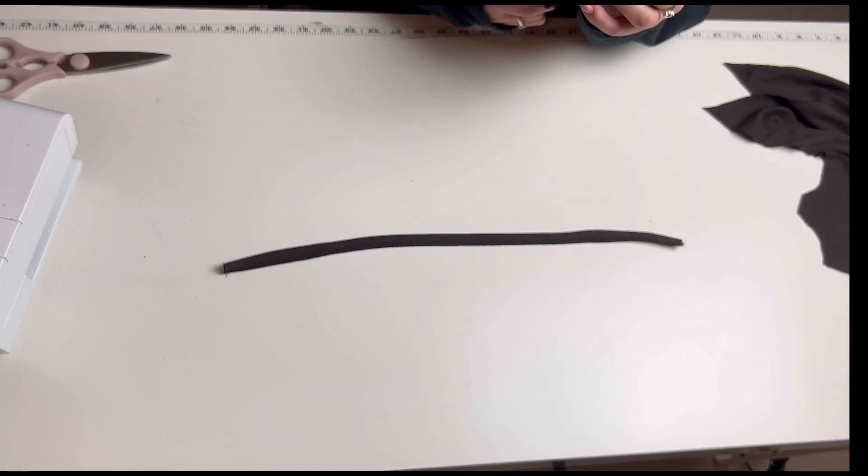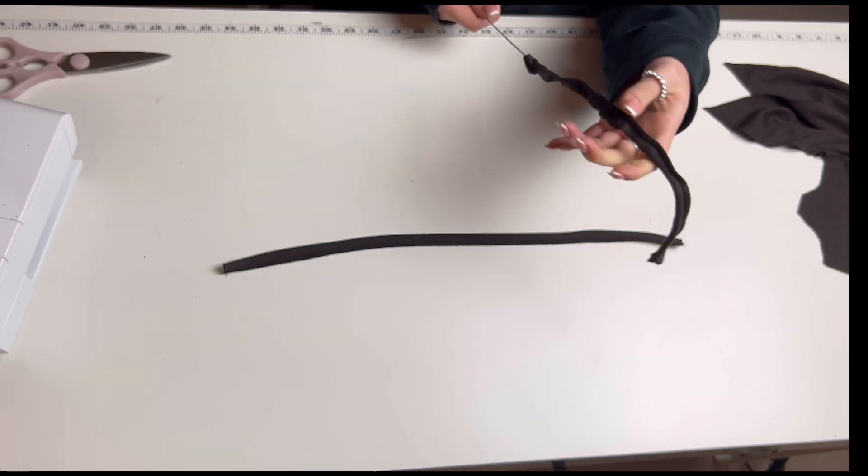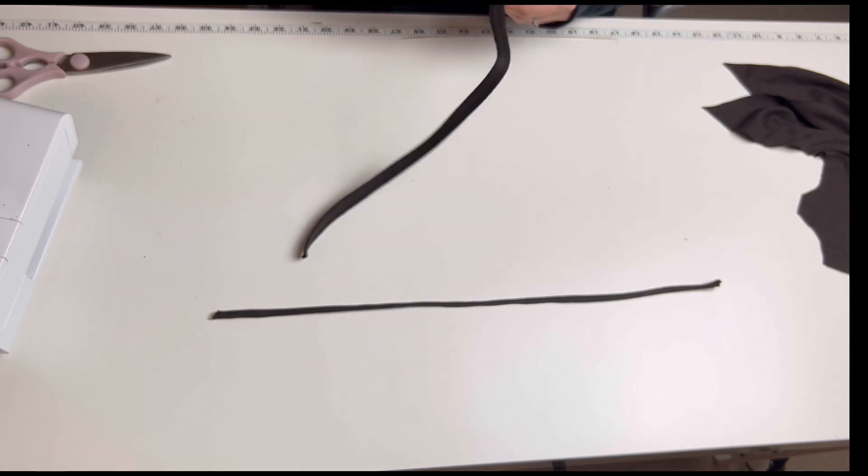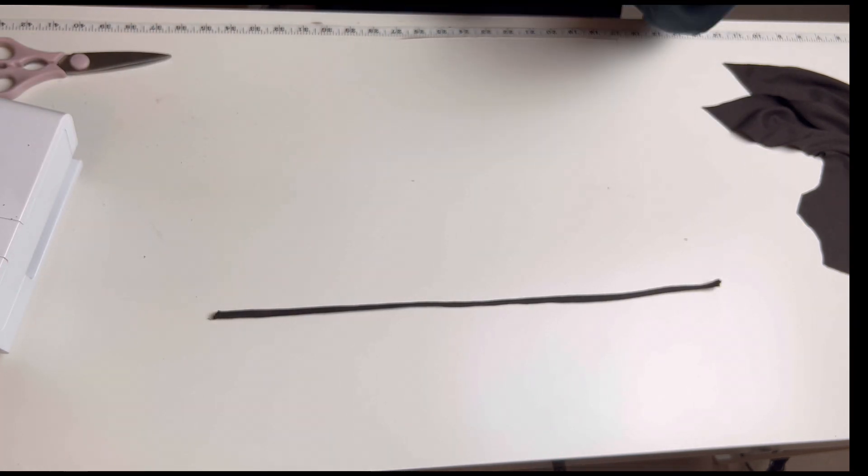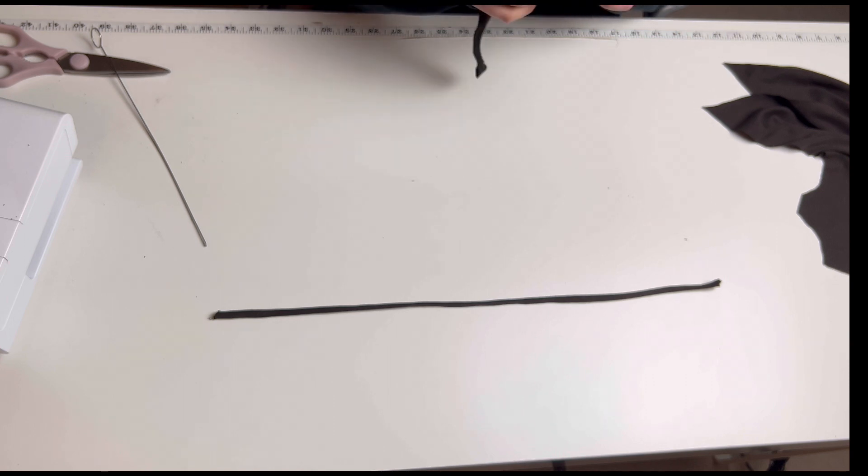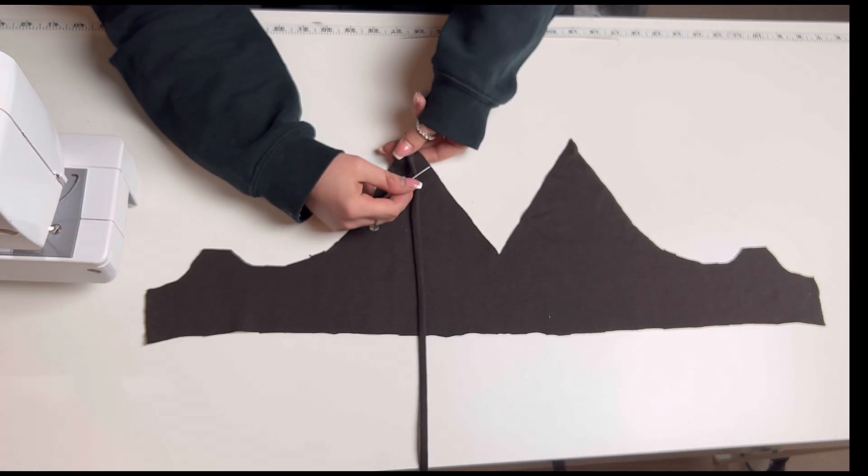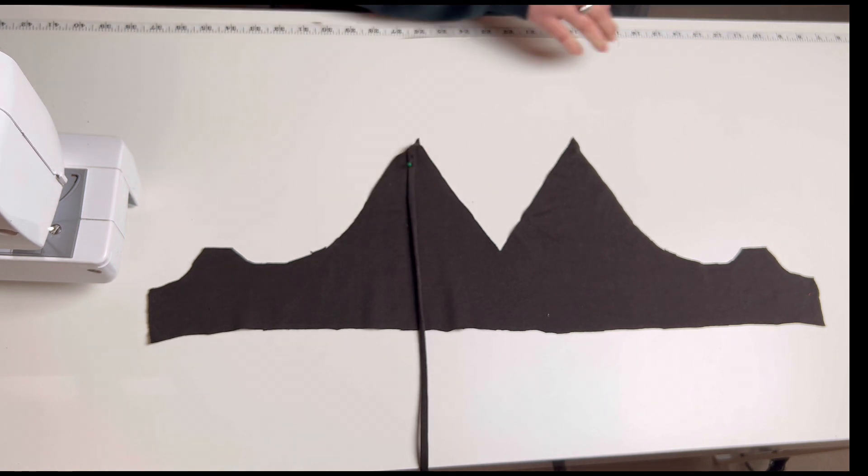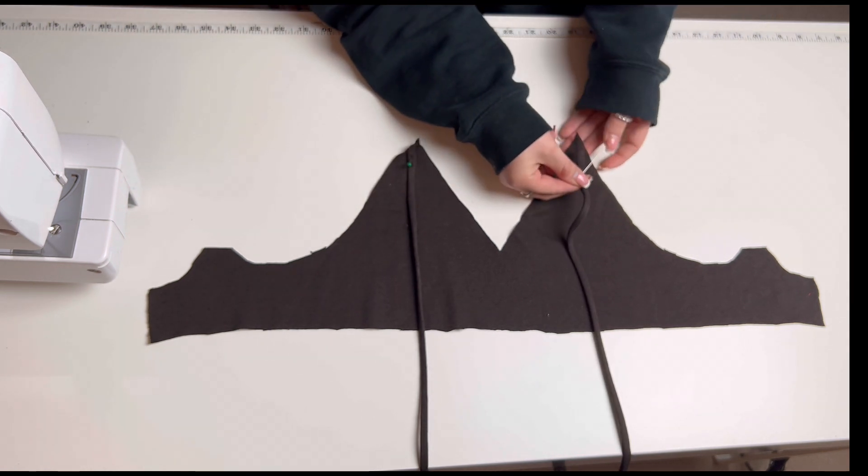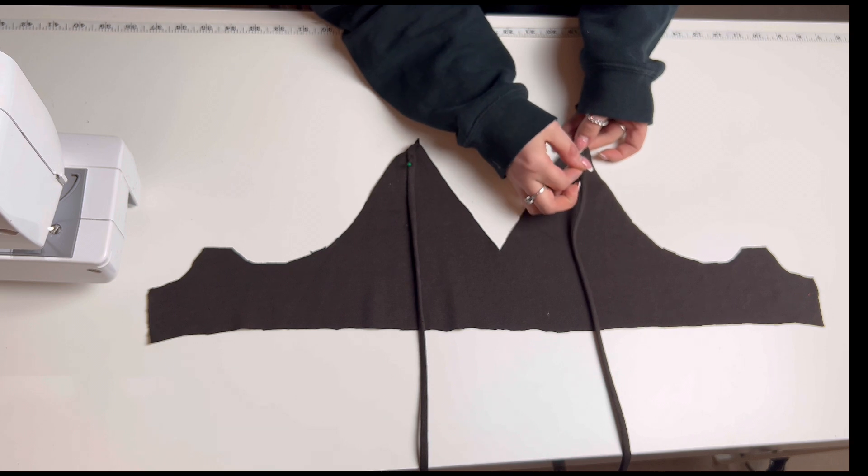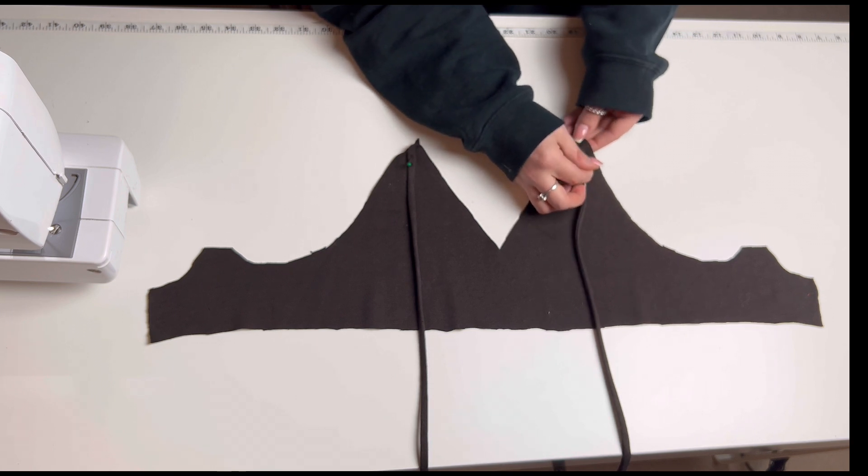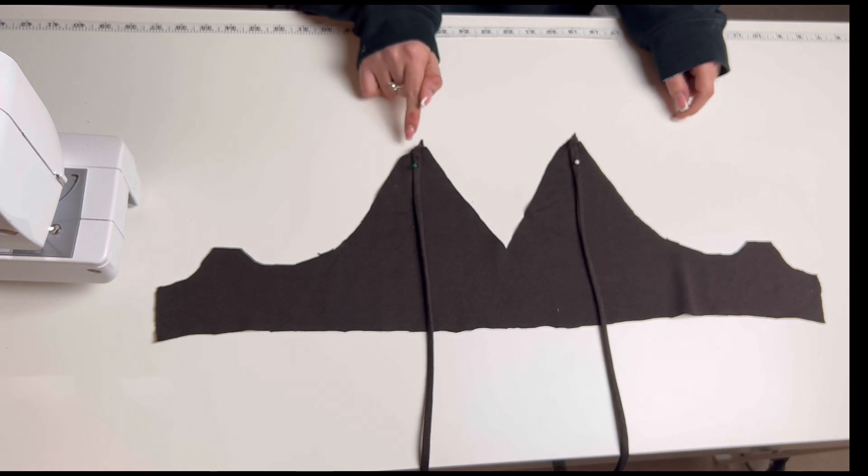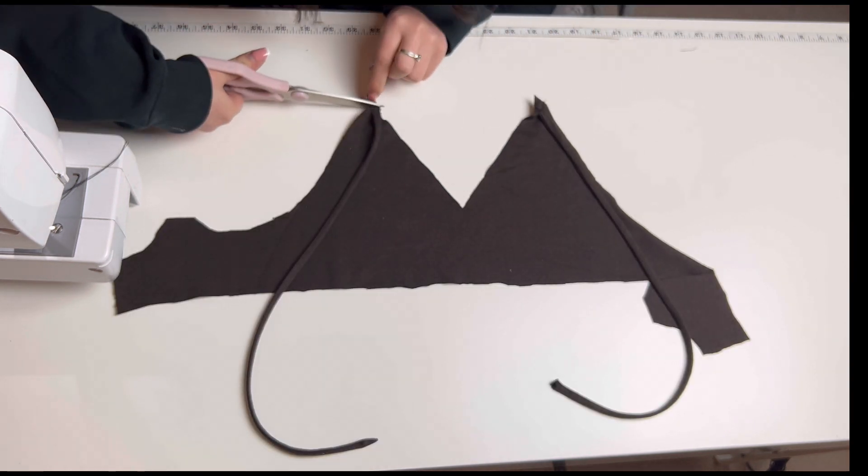Now just use a loop turner or a safety pin to turn your straps back the right way. Next, pin one of your straps to the top of the bralette as you see me do here, and pin the other one to the other side and stitch those down. Cut off any extra fabric.